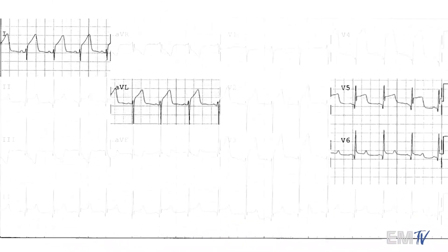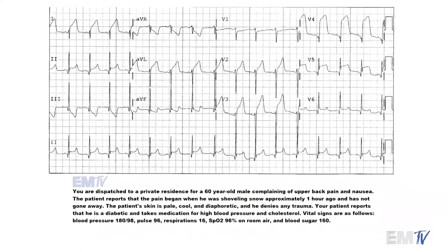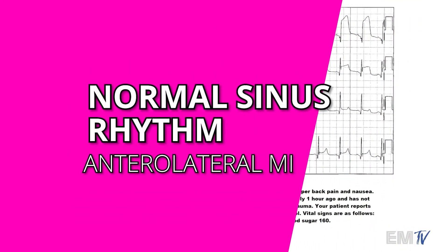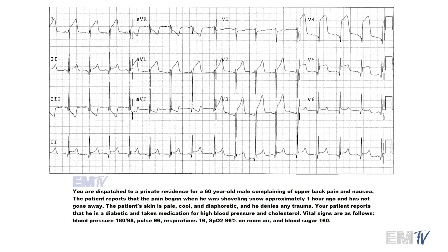Our lateral leads — AVL, V5, and V6 — all show ST segment elevation. So for the purposes of this card and for Static Cardiology, I would diagnose this patient's rhythm as normal sinus rhythm with an anterolateral MI. Let's examine the scenario next.